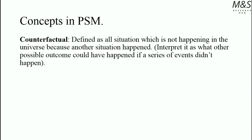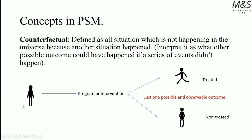An important concept is the counterfactual, defined as all situations which are not happening in the universe because another situation happened. You can interpret this as what other possible outcome could have happened if a series of events didn't happen. To represent this idea, we have the following diagram: we have an individual whose welfare we want to change, so a program or intervention is made. After the intervention, there is only one possible outcome — either the individual was treated or non-treated — and we can only measure one of them.